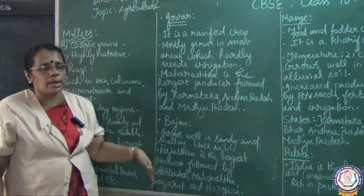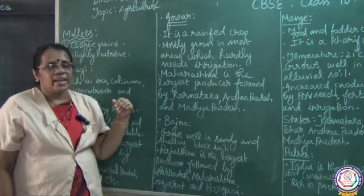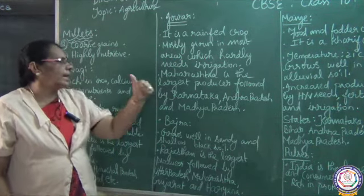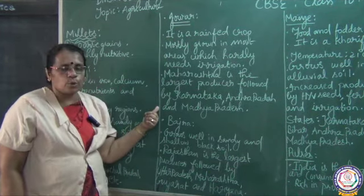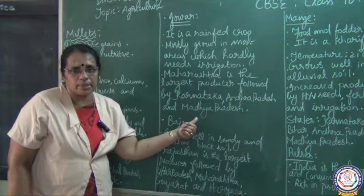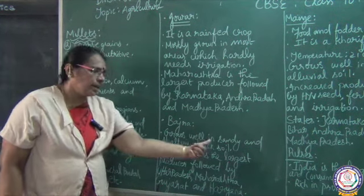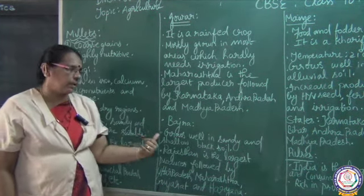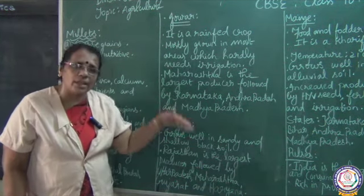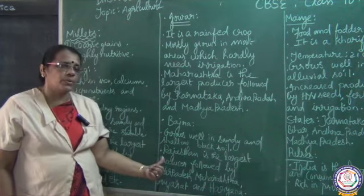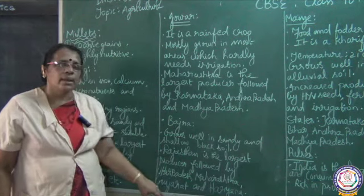To recap jowar and bajra: jowar is a rain-fed crop found in moist areas where irrigation is hardly required. Maharashtra is the largest producer, followed by Karnataka, Andhra Pradesh and Madhya Pradesh. Bajra grows well in sandy soil and shallow black soil. Rajasthan is the largest producer, followed by Uttar Pradesh, Maharashtra, Gujarat and Haryana.